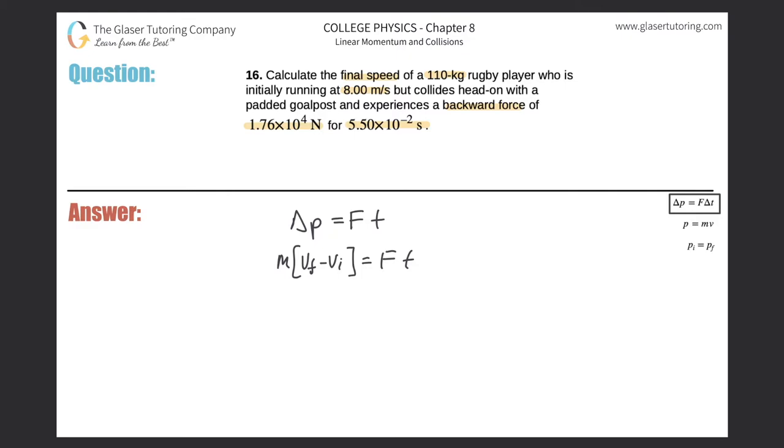Now, if I'm thinking about what I need to find, final speed, that means I need to find the Vf in this problem. So let's do some algebra. Divide out the mass from both sides.